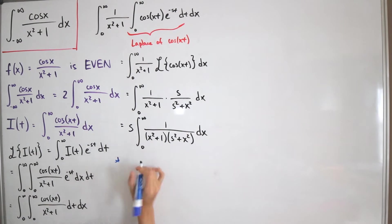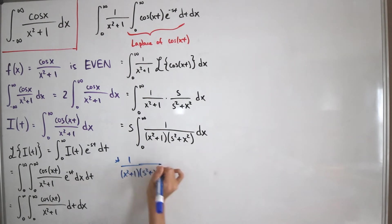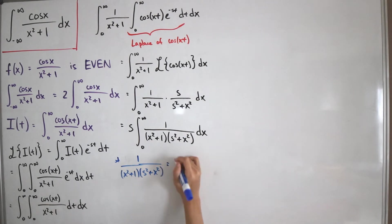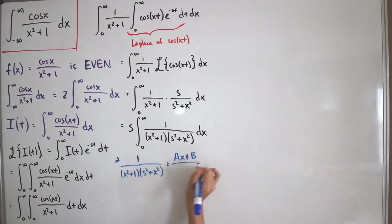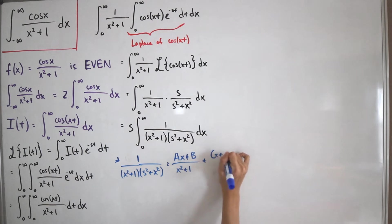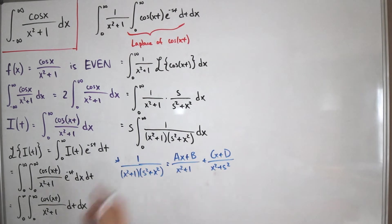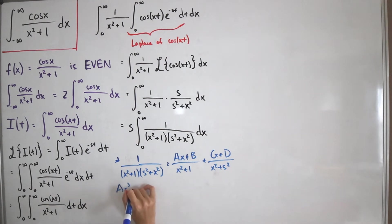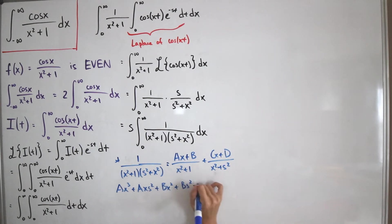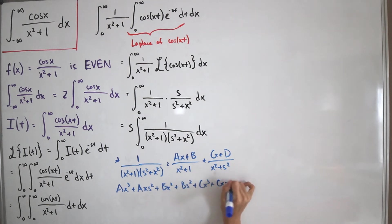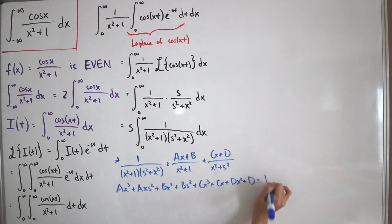For the partial fraction decomposition of 1/[(x²+1)(s²+x²)], since both factors in the denominator are quadratic, the numerators must be linear. So we write: (ax+b)/(x²+1) + (cx+d)/(x²+s²). Cross-multiplying and expanding, we get: ax³ + axs² + bx² + bs² + cx³ + cx + dx² + d, all set equal to 1.